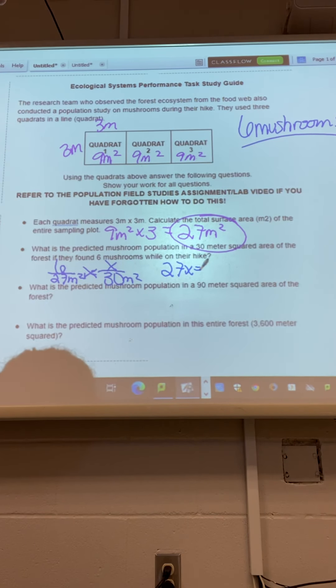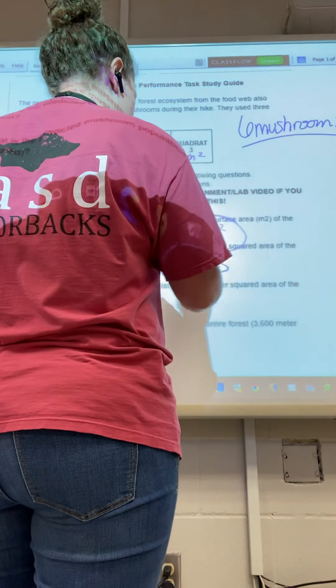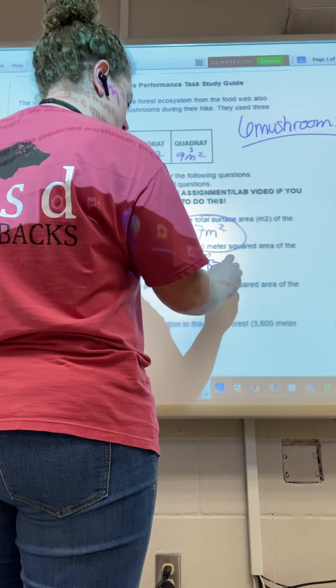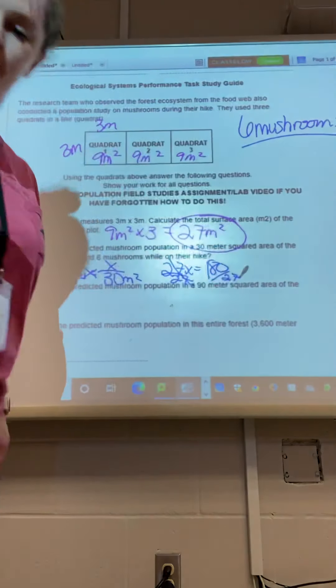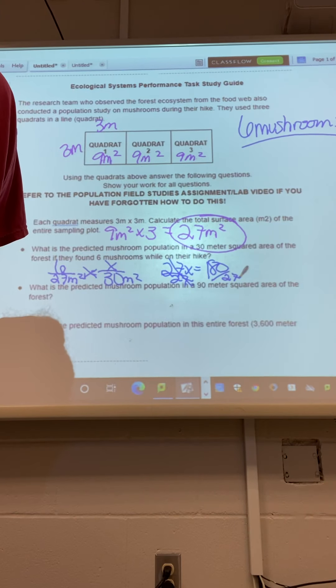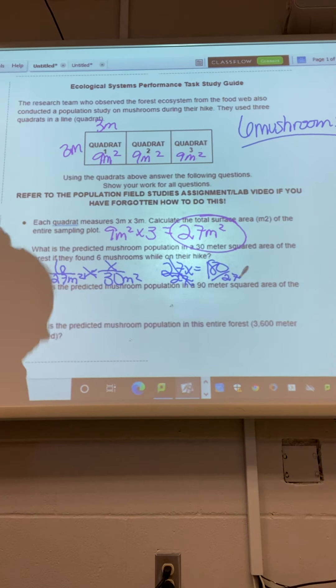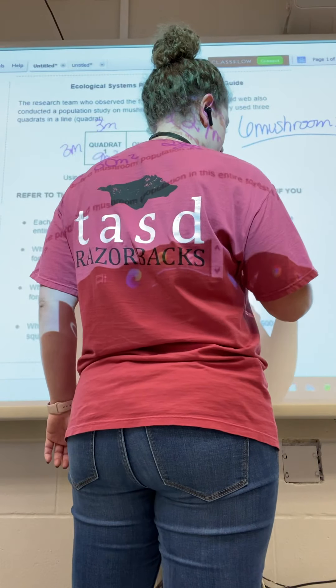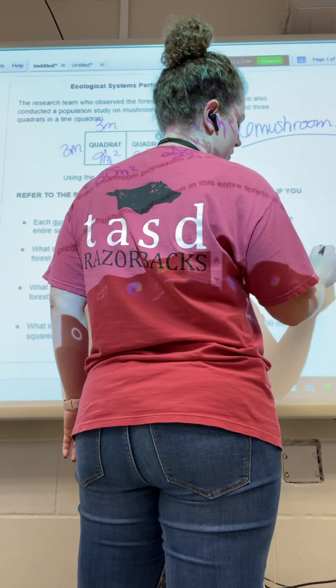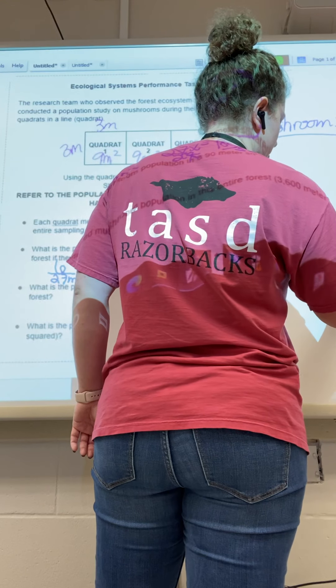Six. I don't trust my math at all. So okay, 180. 27 divided by 27 equals 6.7. We're going to round back to seven mushrooms.